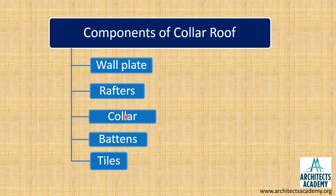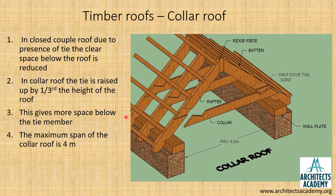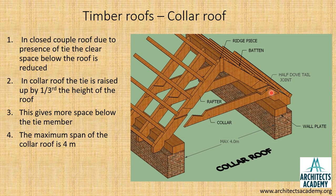The collar is similar to the tie member which we had seen in the closed couple roof. Looking at this sketch, the two inclined members are called rafters. The tie member here, instead of being a straight tie as seen in the closed couple roof, has been given a particular shape and is jointed with the rafters — this is now called the collar.